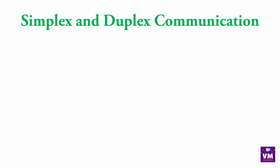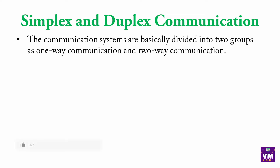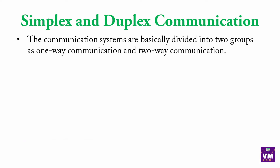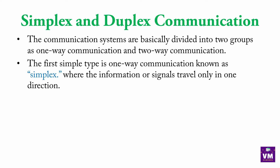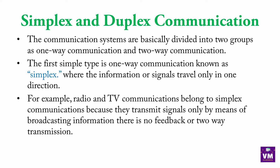Simplex and duplex communication. The communication systems are basically divided into two groups as one way communication and two way communication. Yeh first property thi, first part tha, jismein likha hai one way communication and two way communication. The first simple type is one way communication, known as simplex. Jo one way communication hota hai usse bolte hai simplex communication, where the information or signal travels only in one direction. Naam se hi pata chalta hai — sirf ek hi way hai, ek hi side se communication ho sakta hai.